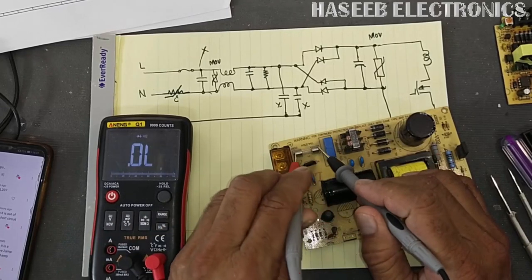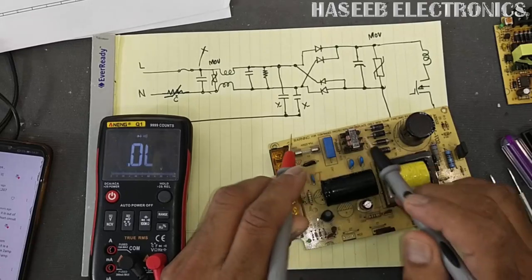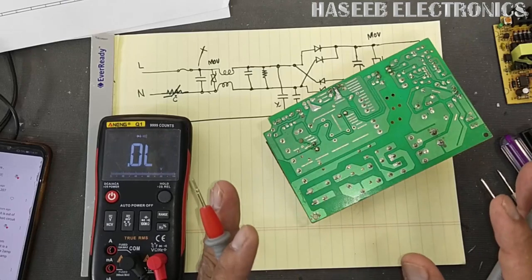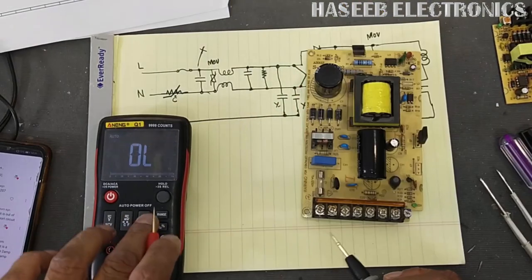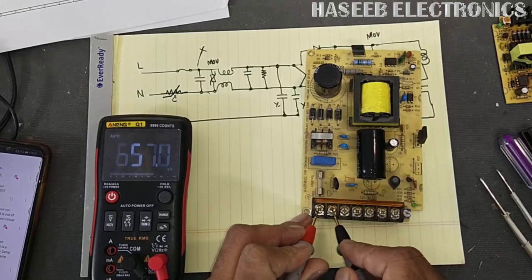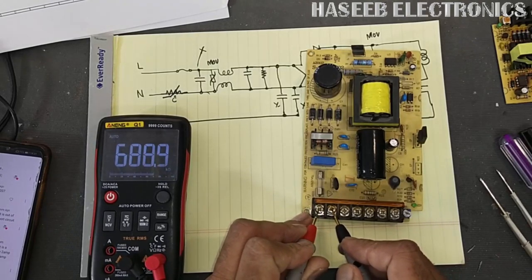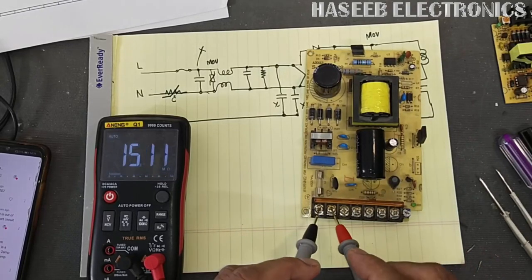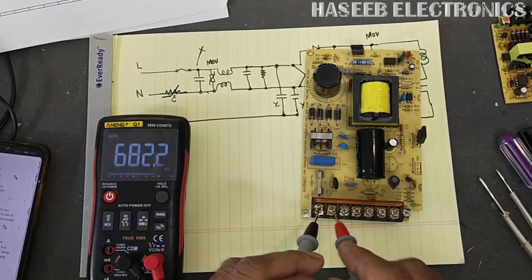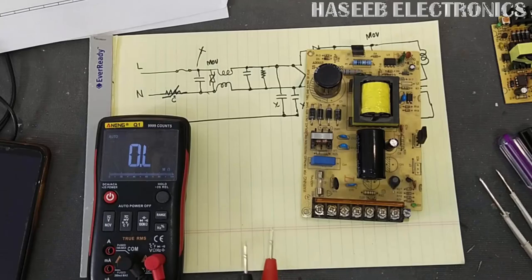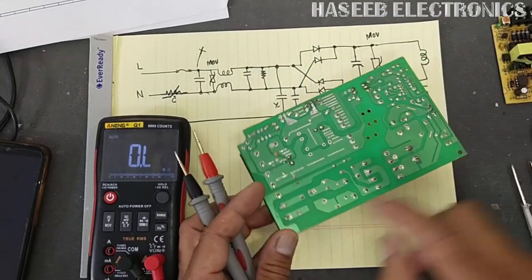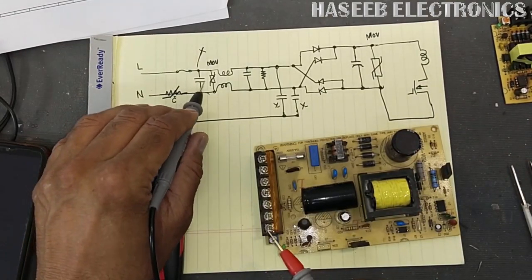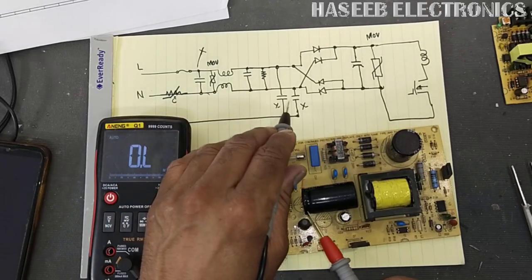The fuse must give continuity if it is good — that is our first checkpoint. Then set to ohms and connect to the input terminals, line and neutral. It must show high resistance in kilo-ohms — 500 to 600 kilo-ohms is okay. If it shows low resistance it can be due to the filter capacitor, MOV, X capacitor, or the Y capacitors.